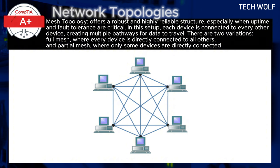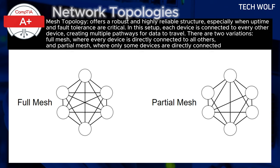Mesh topology offers a robust and highly reliable structure, especially when uptime and fault tolerance are critical. In this setup, each device is connected to every other device, creating multiple pathways for data to travel. There are two variations: Full Mesh, where every device is directly connected to all others, and Partial Mesh, where only some devices are directly connected.